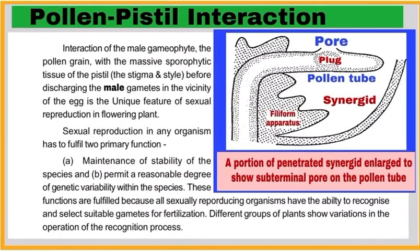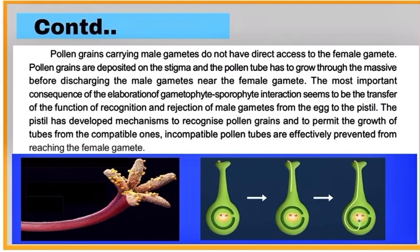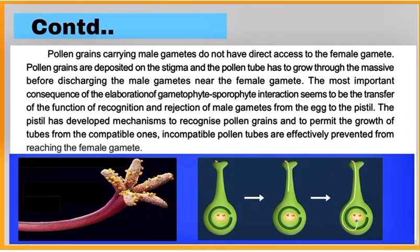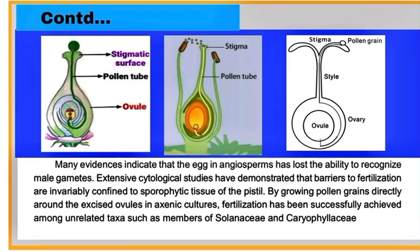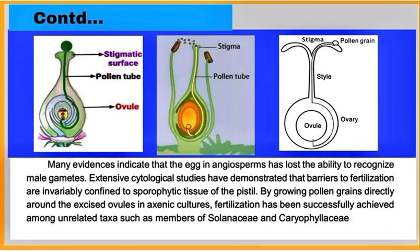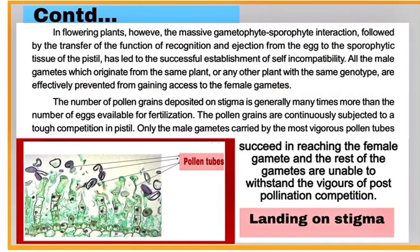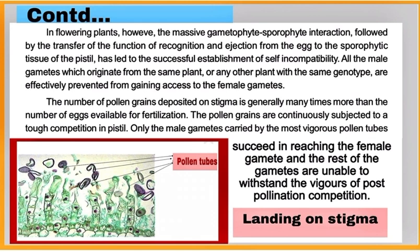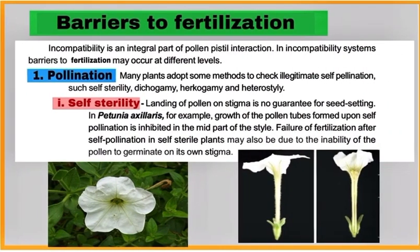Write about pollen pistil interaction. The pistil has developed a mechanism to recognize pollen grains. Paste appropriate pictures. The number of pollen grains deposited on the stigma is generally many times more than the number of eggs available for fertilization.